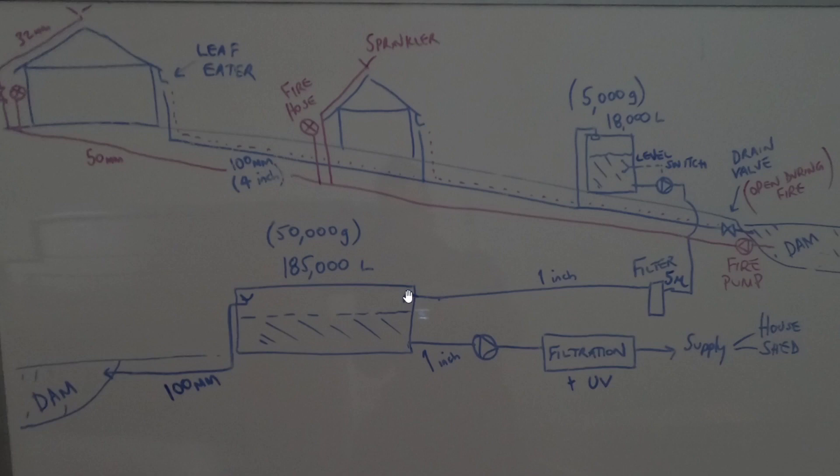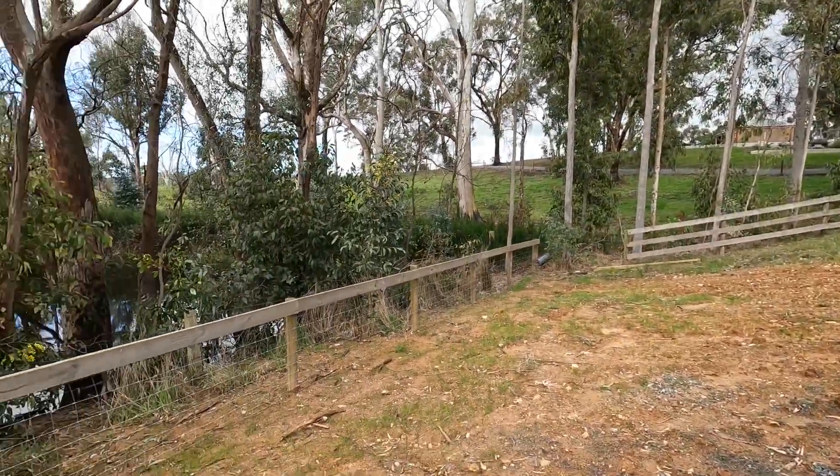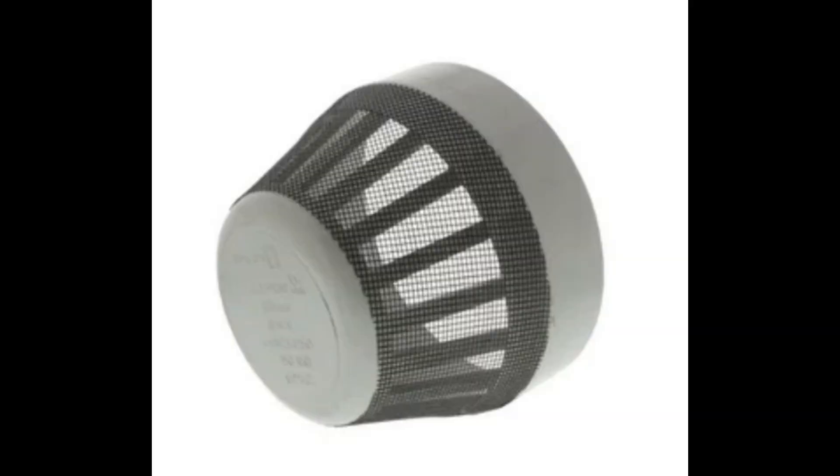The overflow is a 100 mil line goes to another dam I've got. Somebody did ask what stops bugs or bacteria going in there, how does it stay clean. So it simply drains into this dam. On the end of the pipe there's one of these strainers and it just stops mosquitoes or other insects getting into that pipe.